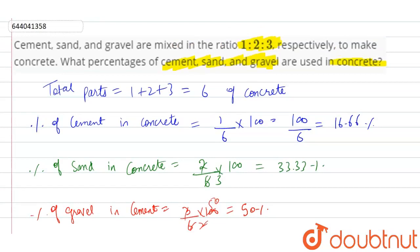This is our answer. That is percentage of cement is 16.66 percent, percentage of sand is 33.33 percent, and percentage of gravel is equal to 50 percent. Thank you.